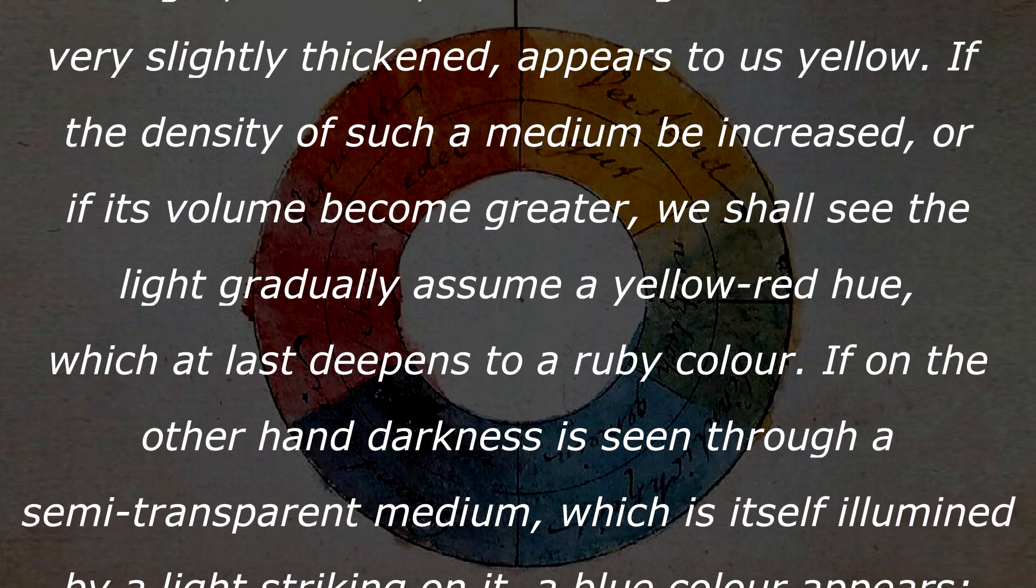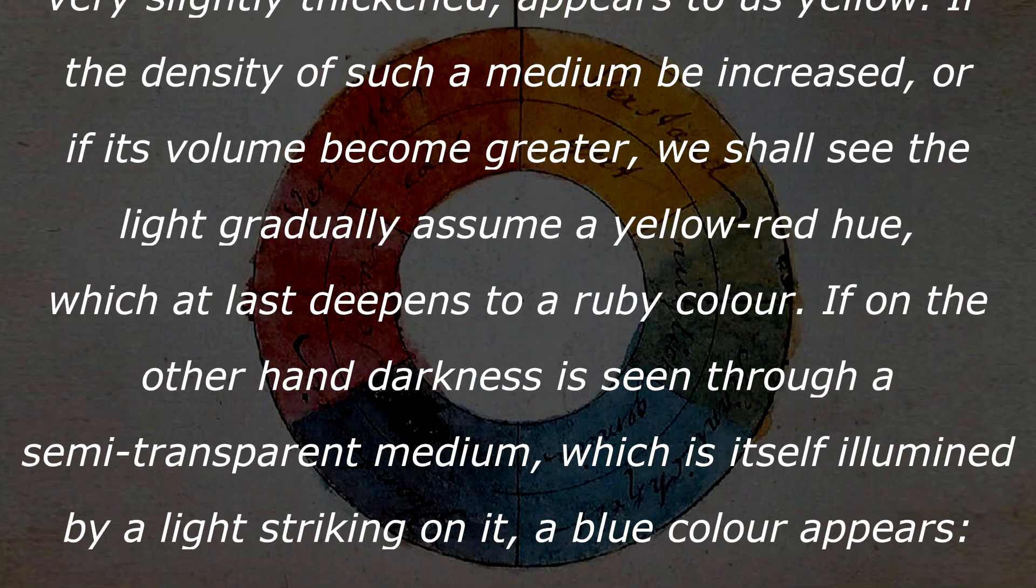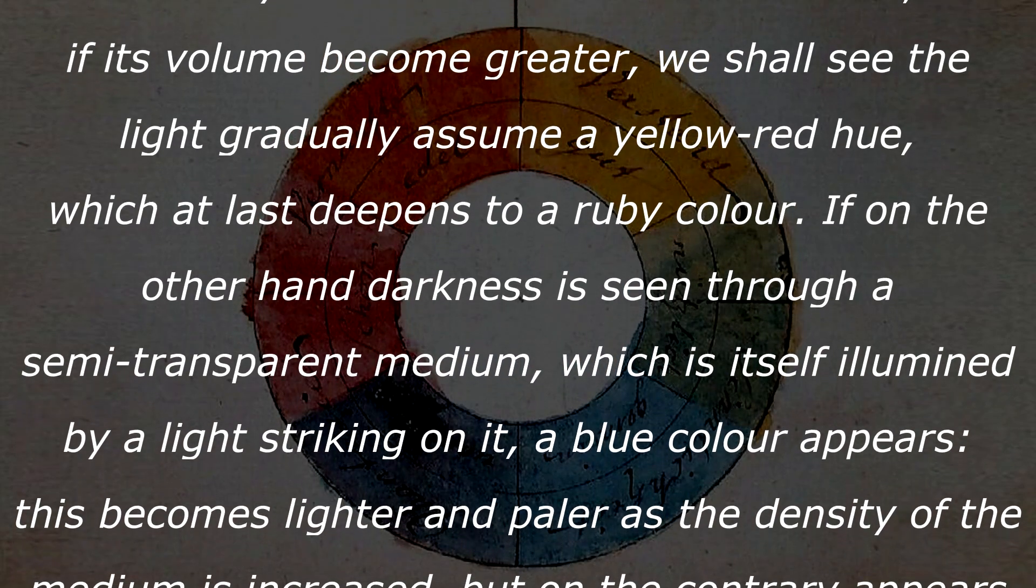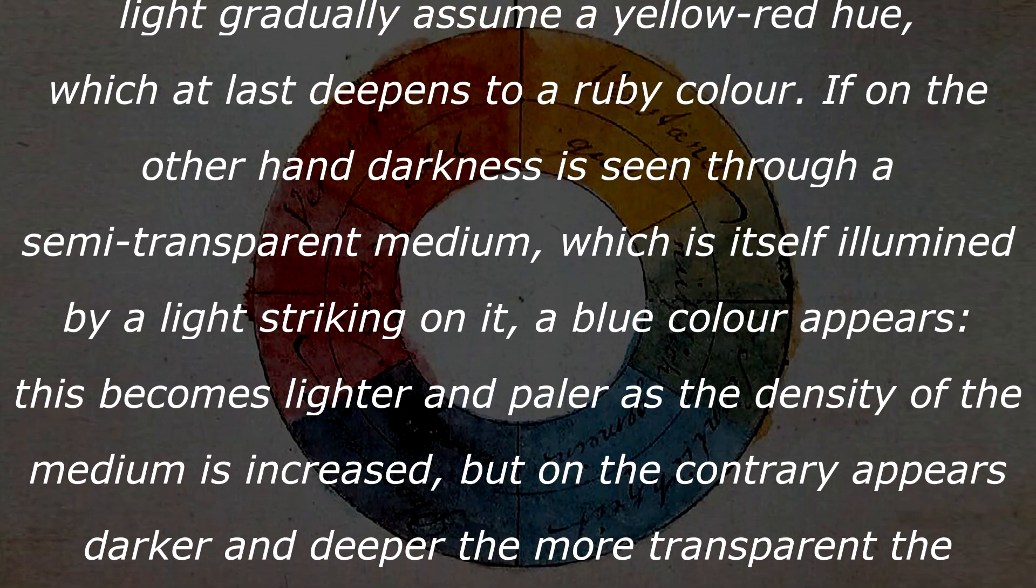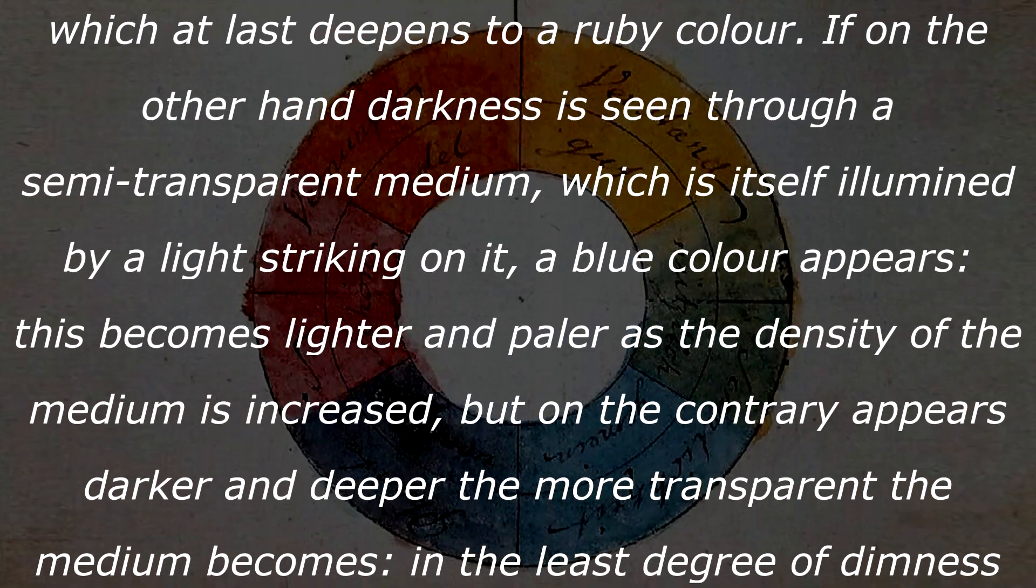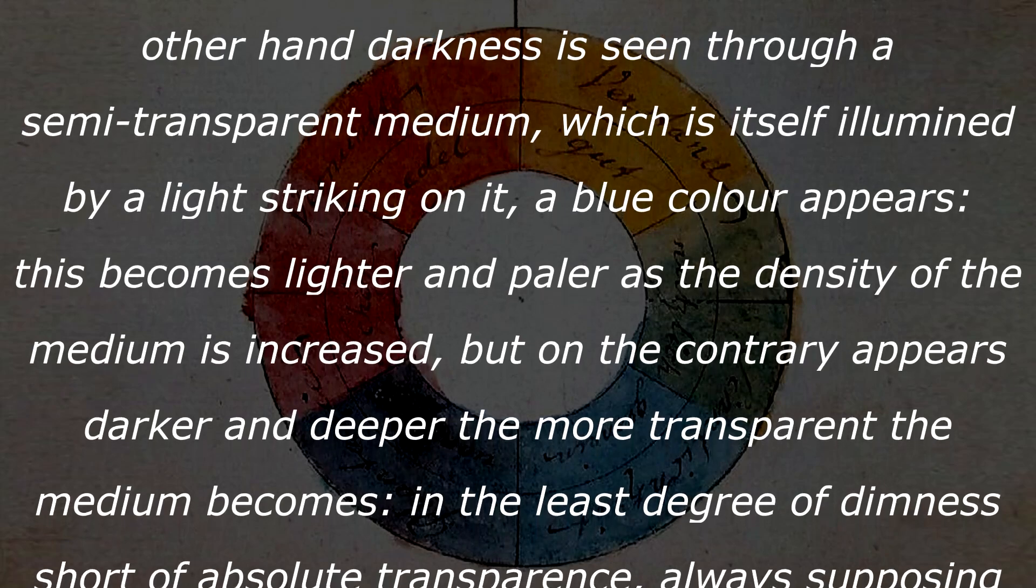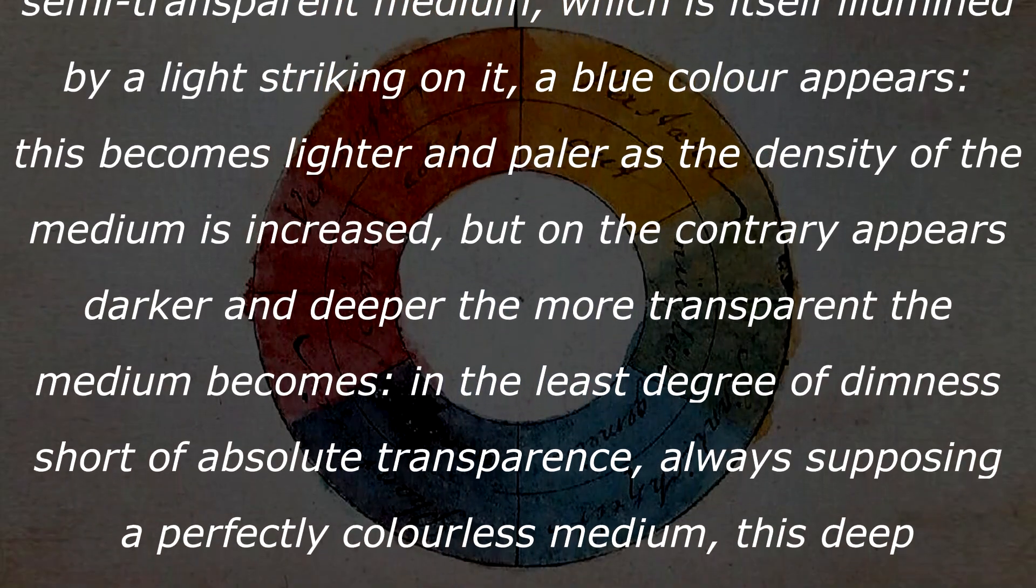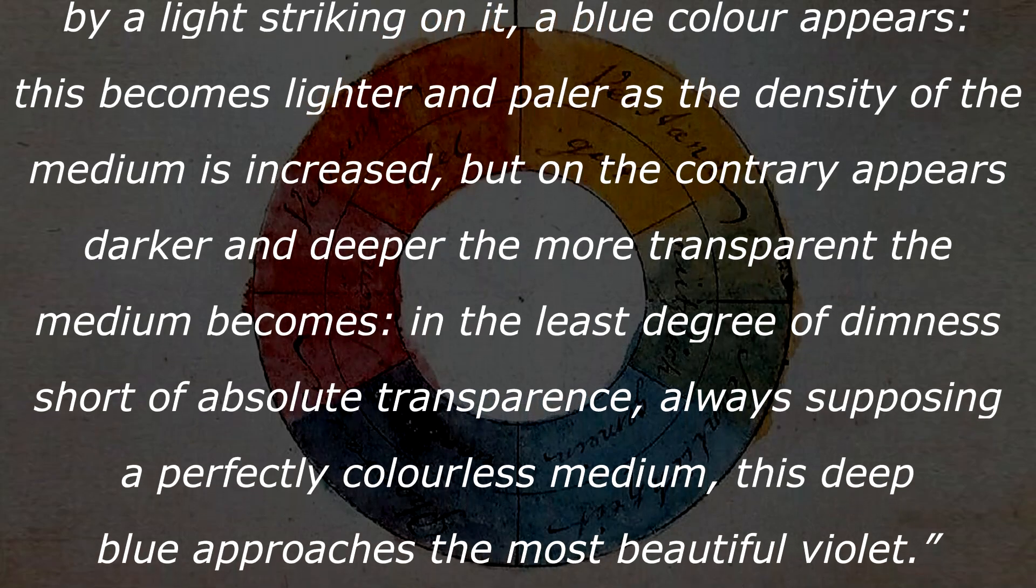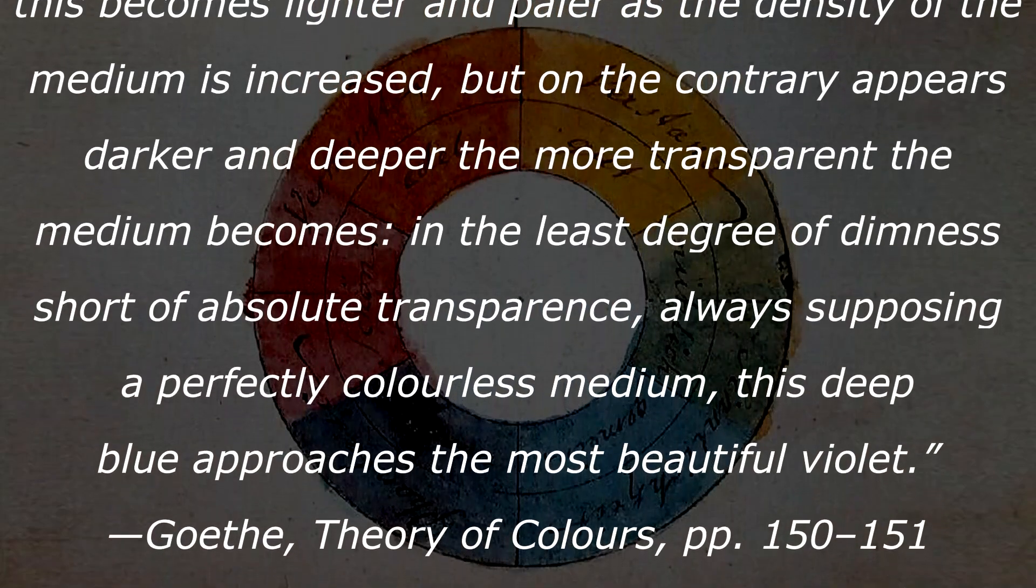If, on the other hand, darkness is seen through a semi-transparent medium which is itself illuminated by a light striking on it, a blue color appears. This becomes lighter and paler as the density of the medium is increased, but on the contrary appears darker and deeper the more transparent the medium becomes. In the least degrees of dimness, short of absolute transparency, always supposing a perfect colorless medium,